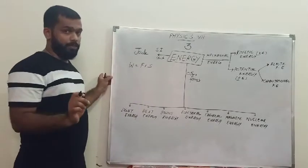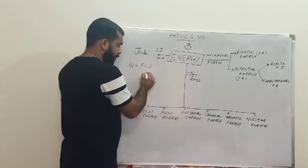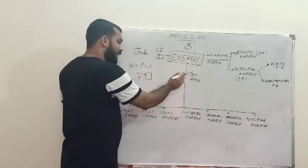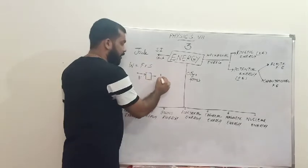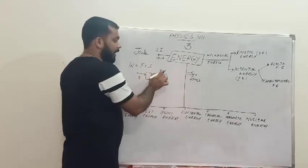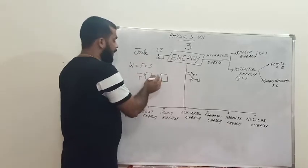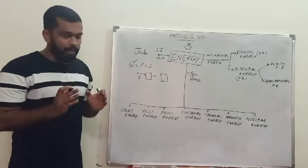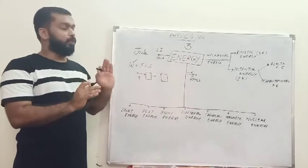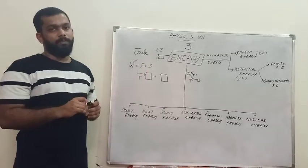Displacement is represented with the letter S. If I have an object placed somewhere and I apply force from one direction, and the object moves in the same direction — meaning it has displacement in the same direction as the force — then I can say that I have done some amount of work. This is what we consider as work in physics.